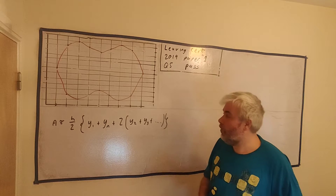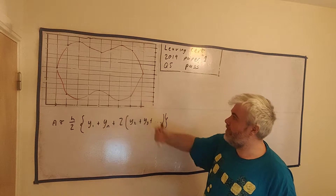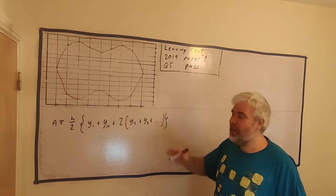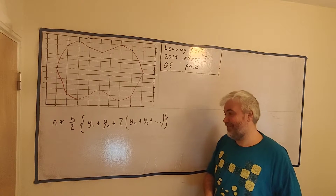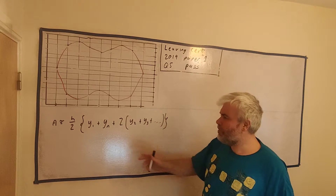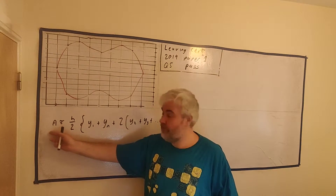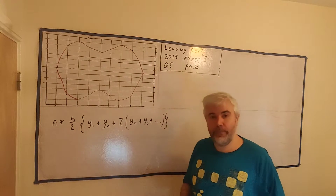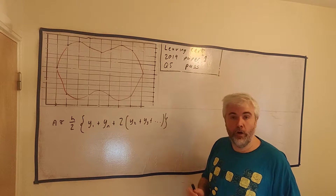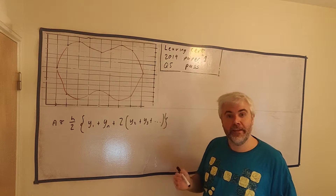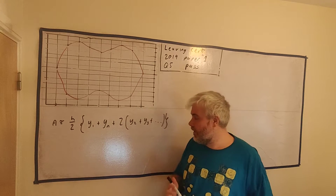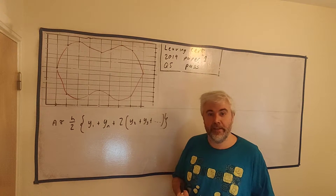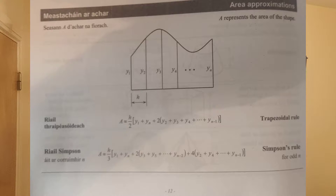I've done my best to copy the question out on the board. Some of these sizes are a bit off, but it should be good enough for what we need to do. I've also added in something that the question didn't give us — the trapezoid rule here. I've taken this from the formula book, and I'd like to point out, because some students don't seem to realise, this is in your formula book.